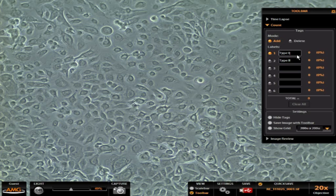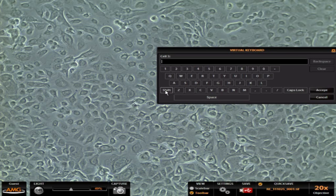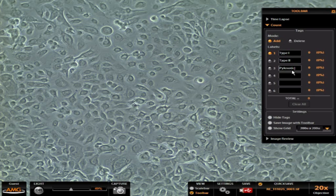If I want to create any other types, I can click in the text box here and type those in with a virtual keyboard, such as going in here and creating pyknotic cells. Say accept and now I've got that category created.